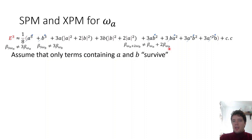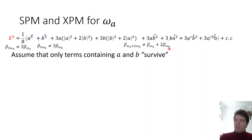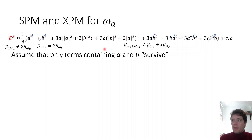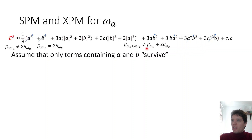It actually sounds difficult to make these terms cancel out, but in reality it's far harder to make any of them survive, because so many conditions must be satisfied simultaneously. If you pick a random medium and random frequencies, it's very unlikely any terms will survive — you actually have to engineer things carefully. The point is we can terminate terms in the E-cubed expansion simply because the spatial frequency doesn't line up.